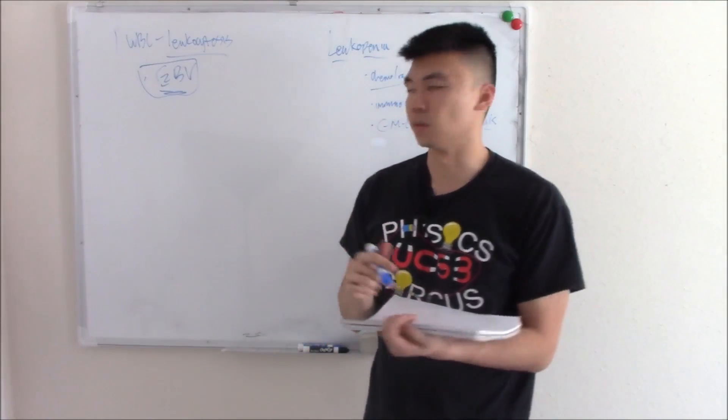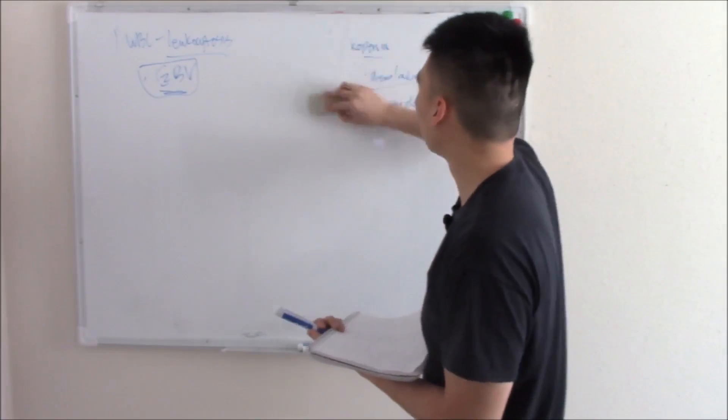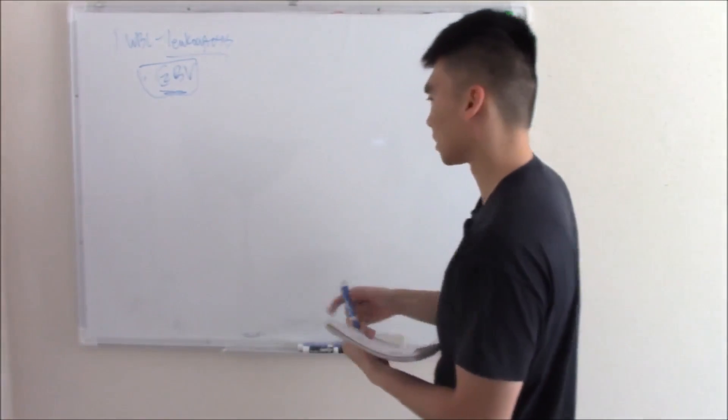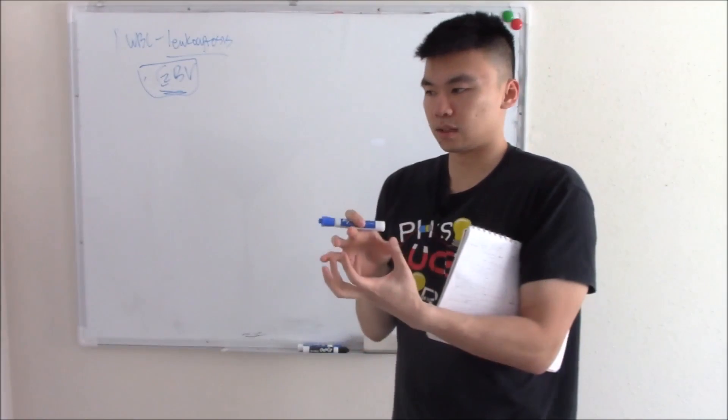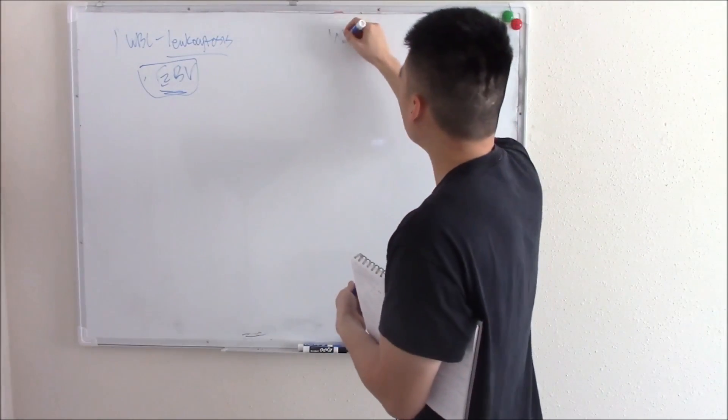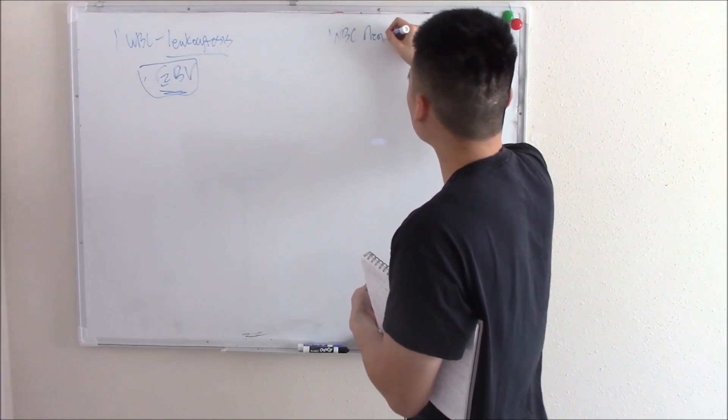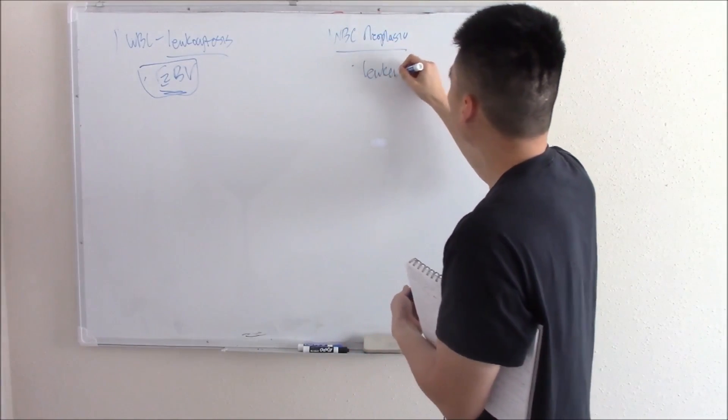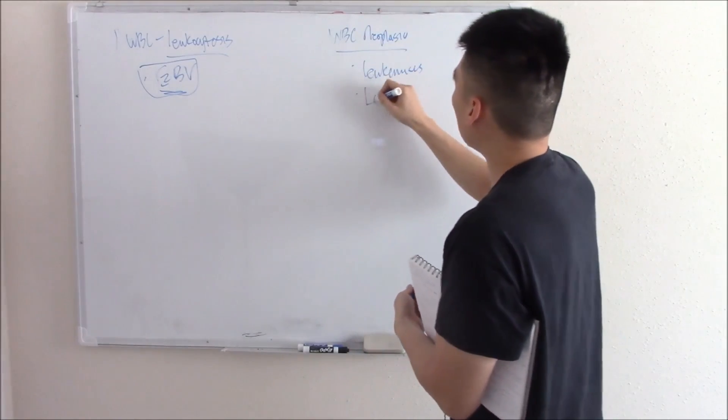Speaking of cancers of the blood, let's talk about white blood cell cancers or white blood cell neoplasia. Basically a white blood cell that's gone haywire and you're making too much of it. White blood cell neoplasias are broken up into leukemias and lymphomas.